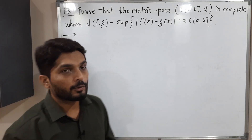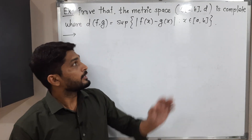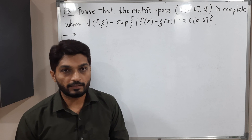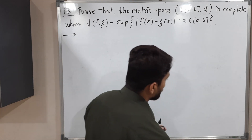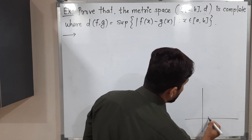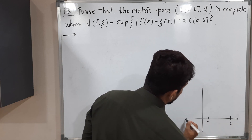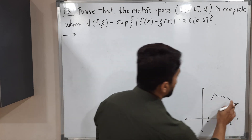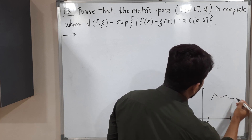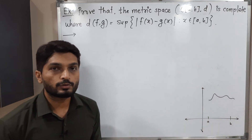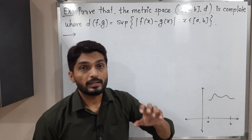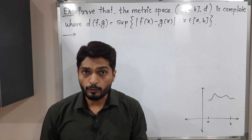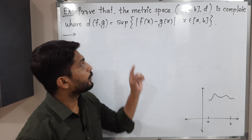Hi everyone. In this video we are going to discuss this example. C[a,b] means the set of all continuous functions defined on the closed interval [a,b]. Suppose this is the y-axis and this is the x-axis. We have some closed interval [a,b], and this is a continuous function defined on it. So C[a,b] is the set of all such continuous functions. We have to prove it is a complete metric space with this metric.